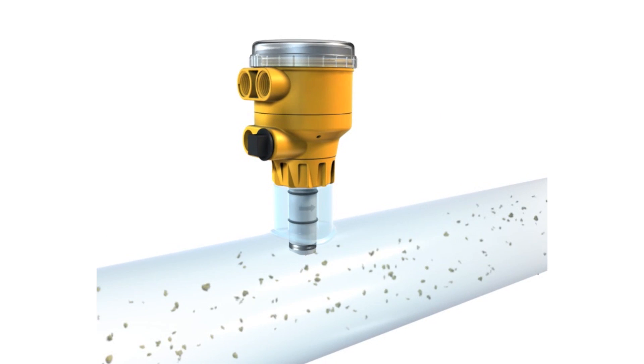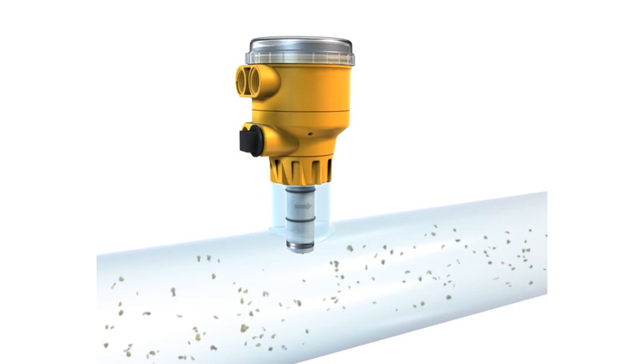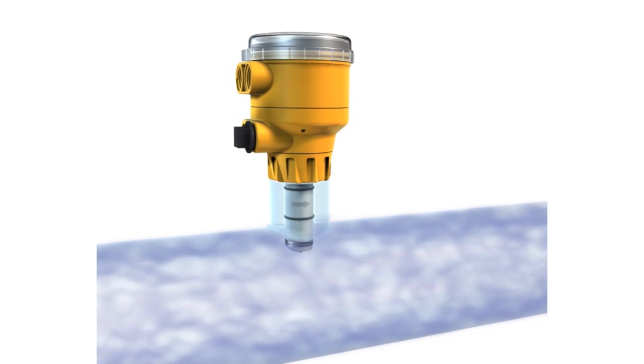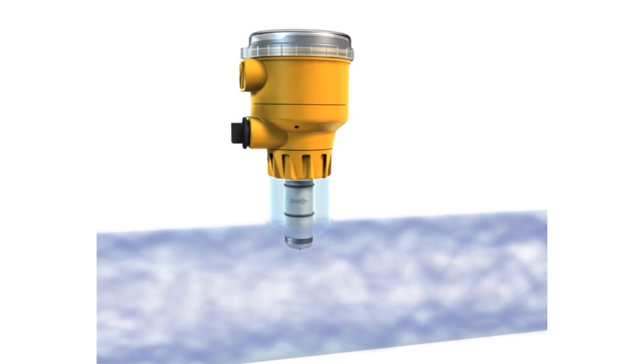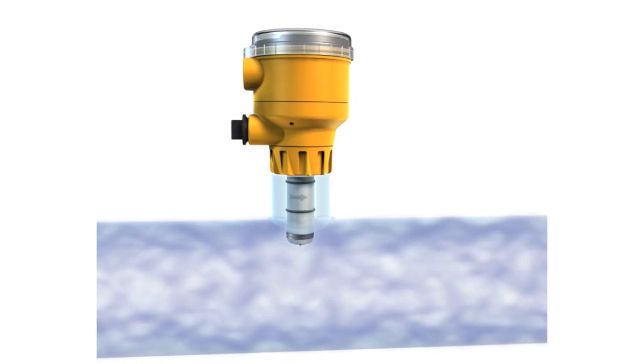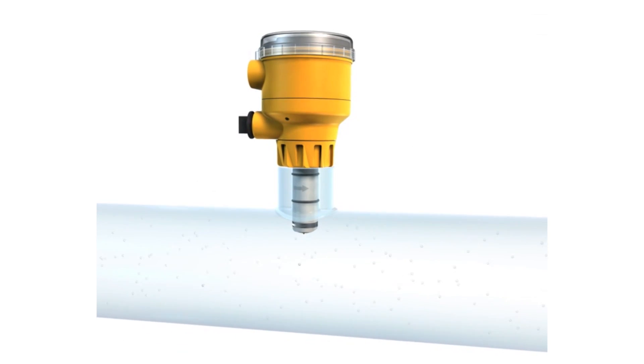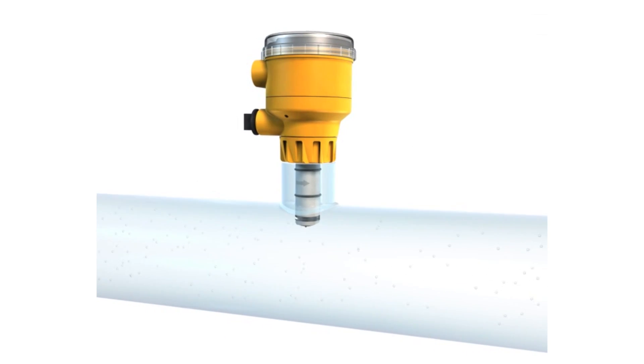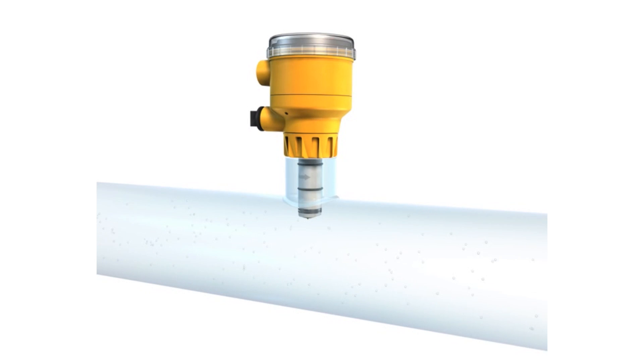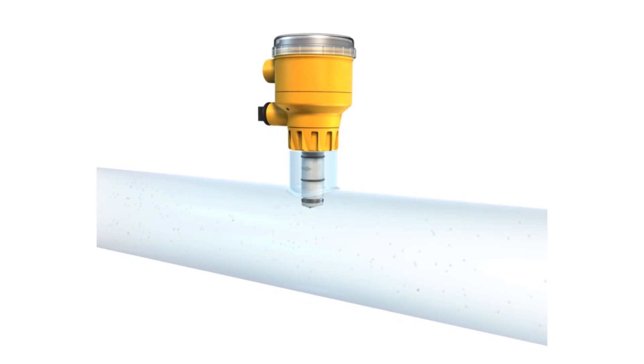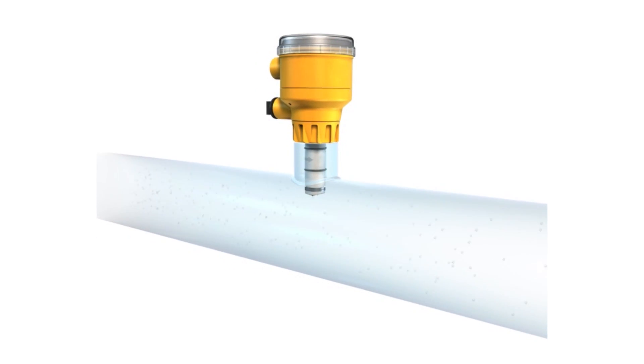Since there are no moving parts, these sensors are ideal for reliable measurement in dirty or high-solid liquids. They are offered in a variety of wetted materials so they can be used in a wide range of liquids flowing in metal or plastic pipes. The sensor installs easily into standard Signet flow fittings.